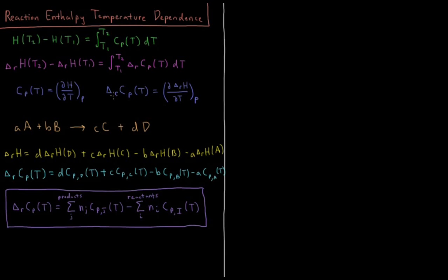So once we calculate this value, we have delta R Cp, and we plug that into our integral, and we integrate from temperature 1 to temperature 2, and that will tell us how our enthalpy of reaction has changed going from T1 up to T2.